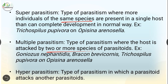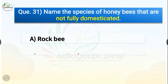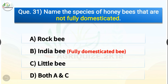Question number thirty-one: Name the species of honeybees that are not fully domesticated. The options are rock bee, Indian bee, little bee, or both A and C. The correct answer is option D — both A and C. Rock bee and little bee are not fully domesticated, whereas Indian bee is a fully domesticated bee.